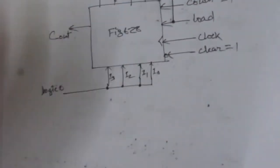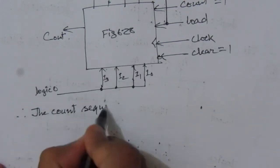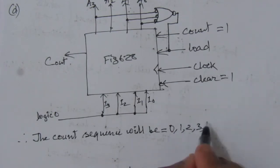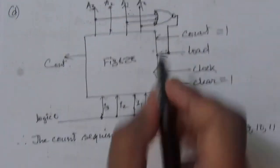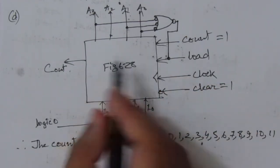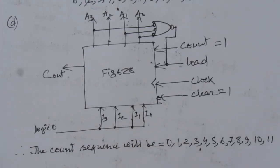So the count sequence of the circuit will be 0, 1, 2, 3, 4, 5, 6, 7, 8, 9, 10, and 11. After 11, load will be 1 and the 0000 value will be loaded into the internal registers. This is the solution of problem number 6.22 from chapter number 6. Thank you for watching. If you have any question, please put it in the comment section below. Also like, share, and subscribe to my channel.